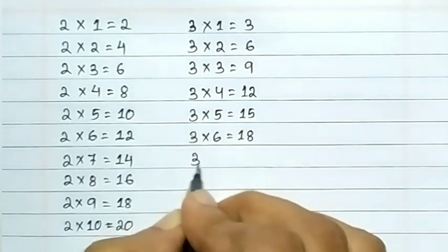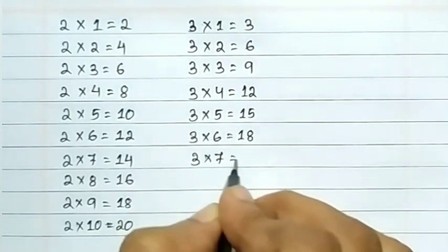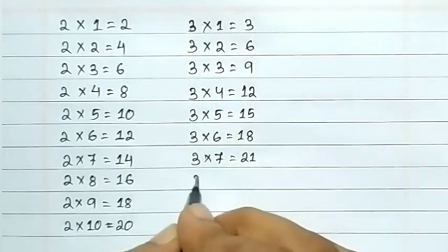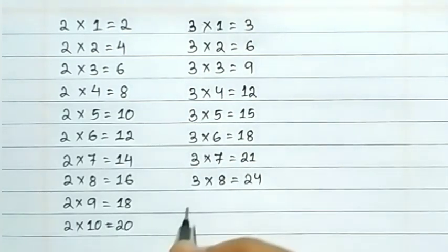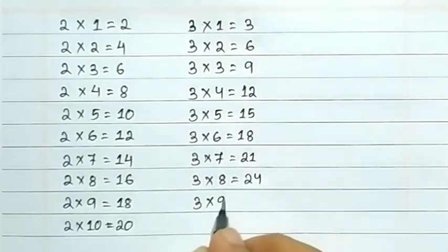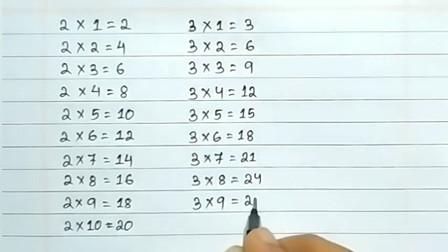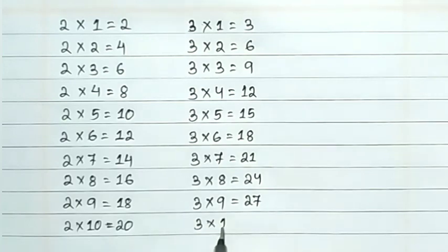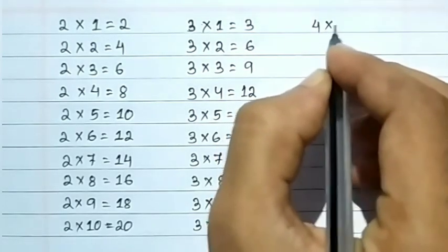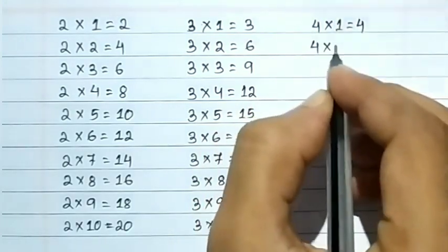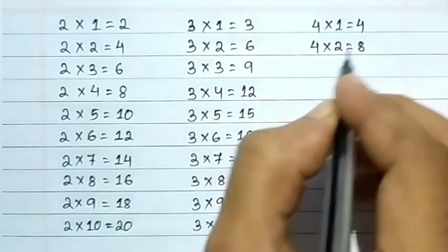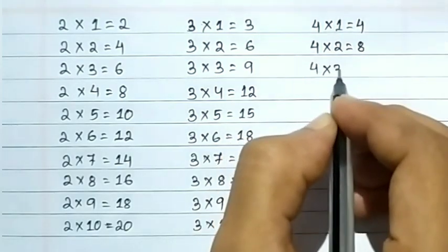3 7s are 21, 3 8s are 24, 3 9s are 27, 3 10s are 30. Now we learn table of 4. 4 1s are 4, 4 2s are 8, 4 3s are 12.